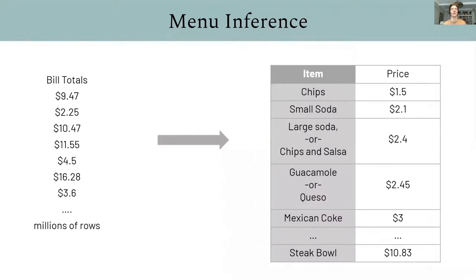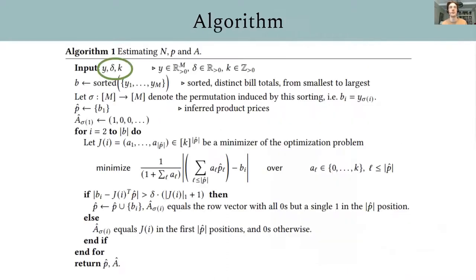The key inference task is to take a vector of bill totals on the left and automatically infer product prices on the right. So we would like to know if $9.47 is the purchase of a single item. And if you spent $16.28, that means you likely bought three different products. And if so, we want to know their prices.